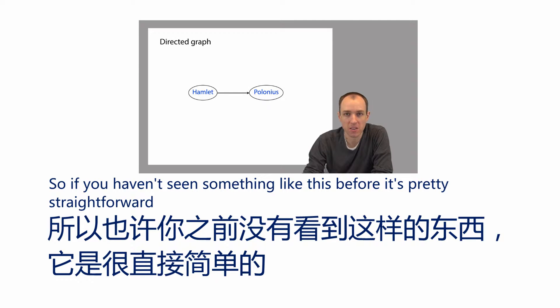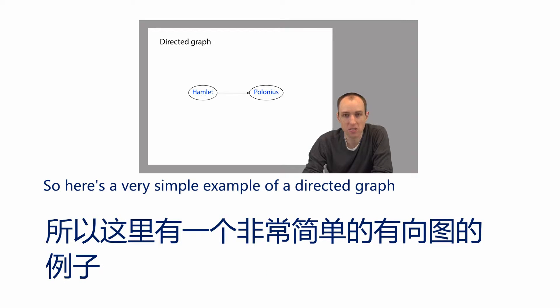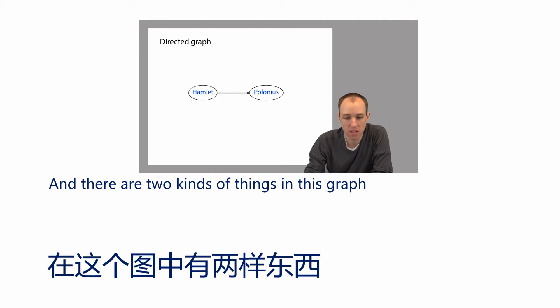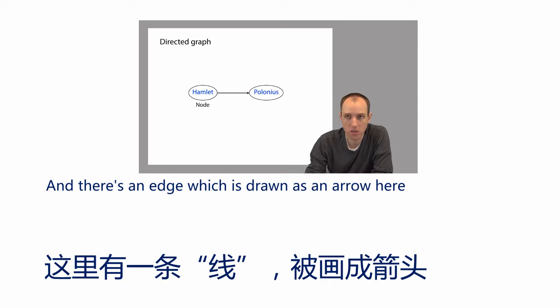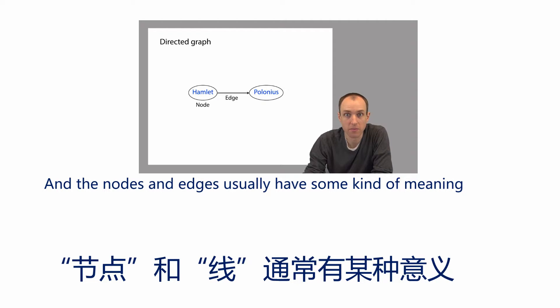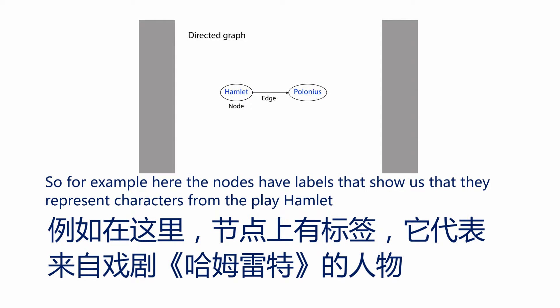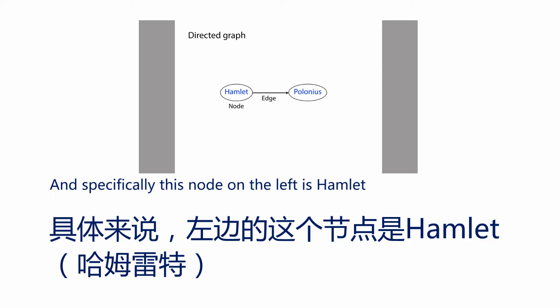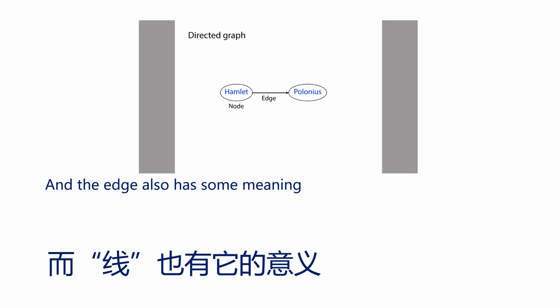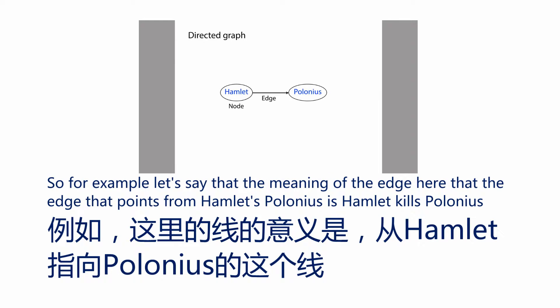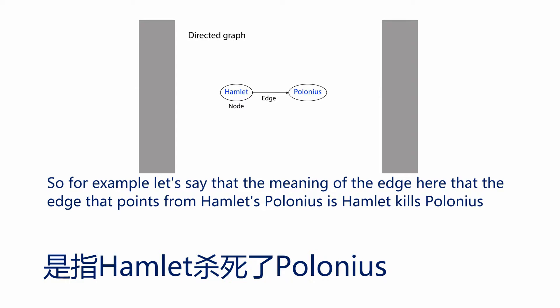If you haven't seen something like this before, it's pretty straightforward. Here's a very simple example of a directed graph. There are two kinds of things in this graph: there are nodes, which are drawn as ovals, and there's an edge, which is drawn as an arrow. The nodes and edges usually have some kind of meaning. For example, the nodes have labels showing they represent characters from the play Hamlet — the node on the left is Hamlet and the node on the right is Polonius — and the edge also has meaning, for example that Hamlet kills Polonius.